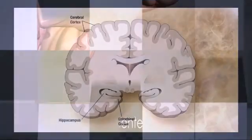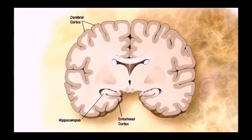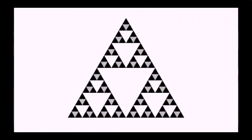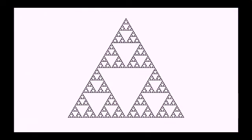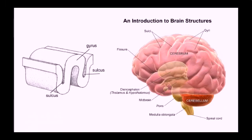The amount of cerebral cortex that can fit in the skull is increased by the ridges and grooves. These are known as the gyrus and the sulcus. Gyri are the ridges whereas sulci are the grooves.